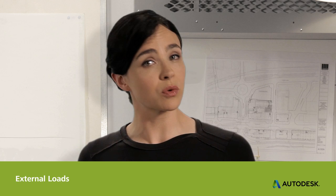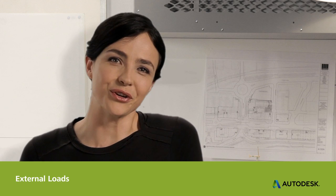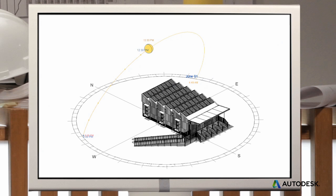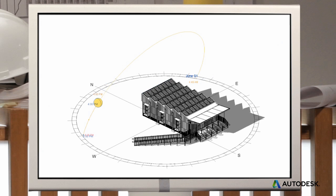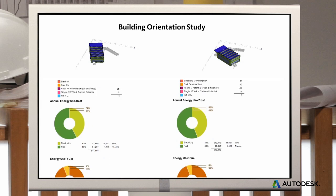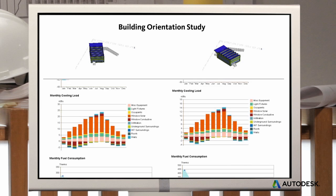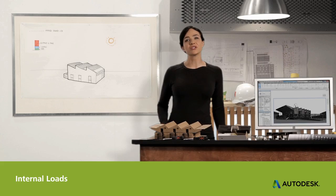The first step is to understand the building energy demands, or loads. Starting with external loads: the sun heats a building through its outer skin and windows, or envelope. The envelope can also gain or lose heat to outside air. But good design can turn these loads into energy assets. Instead of resisting these loads, you can use this natural energy to work for you and reduce the energy you need to generate.